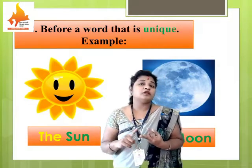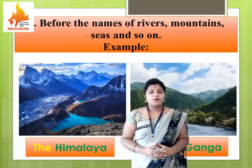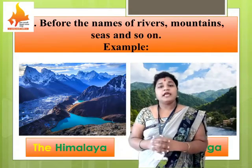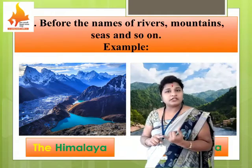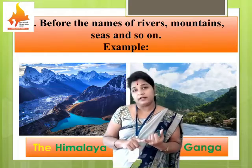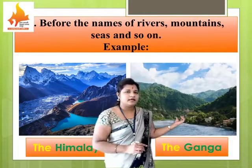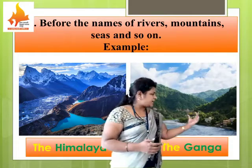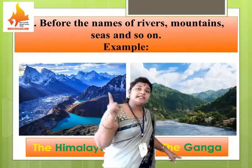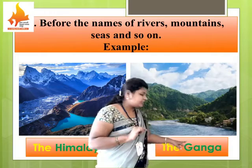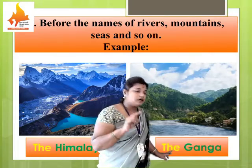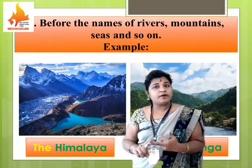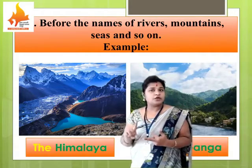Our next point is: before the names of rivers, before the names of mountains, and before the names of seas, we have to use article 'the'. For example, the river Ganga — since 'Ganga' is the name of a river, you always have to use article 'the' before it. But if you are referring to a person named Ganga, do not use any article, because names of persons are proper nouns and we do not use any article before proper nouns.